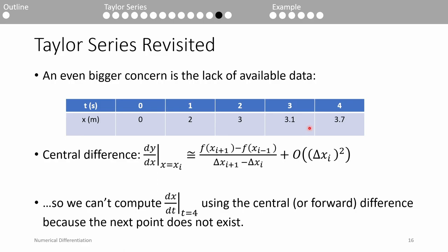Perhaps the biggest concern with any differentiation scheme regardless of accuracy is the amount of available data. Let's take the central difference as an example. To compute the central difference at a point, we need the point in front of and behind the current point. This means we can't use the central difference at the last data point because the point in front of t equals 4 does not exist. We also cannot use the forward difference at t equals 4 for the same reason. When we numerically differentiate, we typically use a combination of all three schemes: the forward difference at the first data point, the backward difference at the last data point, and the central difference for all the data points in between.